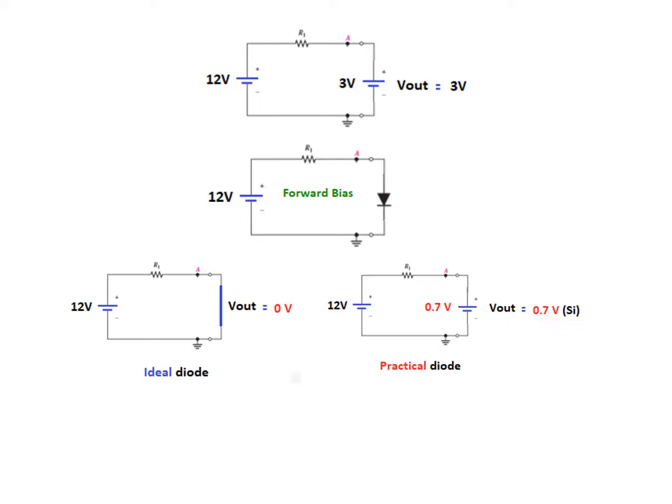In case it was a germanium diode, it will be 0.3 volts. This is the main difference. We will discuss both in subsequent problems, whether it is an ideal diode case or a practical diode case. If in the problem it is not mentioned, then generally we assume it to be an ideal diode case.